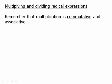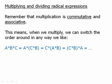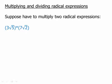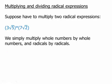Now we'll talk about multiplying and dividing radical expressions. Remember that multiplication is commutative and associative. It means when we're multiplying things, we can swap the order around in any way we like. We can choose which pieces get multiplied together first. Suppose we have to multiply two radical expressions: 3√5 times 7√2. We're simply going to group the whole numbers together, multiply whole numbers by whole numbers, and group the radicals together, multiply radicals by radicals.